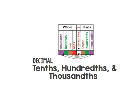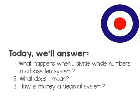Today, we are going to continue our study of place value, but this time, instead of getting bigger, we're going to get smaller. We're going to take a look at decimals, and we're going to answer the questions: what happens when I divide whole numbers in a base 10 system? What's that dot thing mean? And in American money, how is that a decimal system? Well, let's find out.